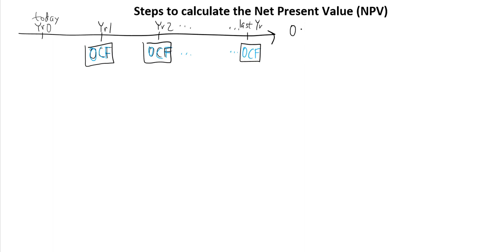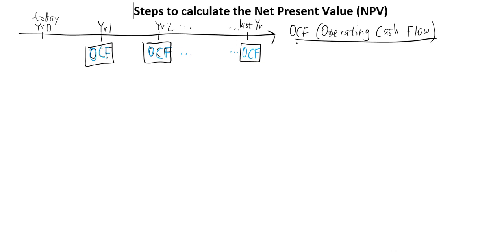Operating cash flow is essentially what profit means — it's the same thing as profit each year. Now, how do we calculate it? There are actually several formulas, but my favorite is the one that gives you the answer the fastest, which is known as the depreciation tax shield approach.